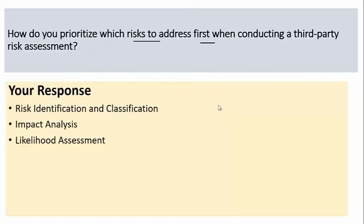First, I identify the potential risks associated with the third party and categorize them by nature — operational impact, data impact, or compliance impact. Then I use a standardized risk assessment framework such as ISO 27005 or ISO 31001 to ensure consistency and comprehensiveness. Once identified, I move to impact analysis.